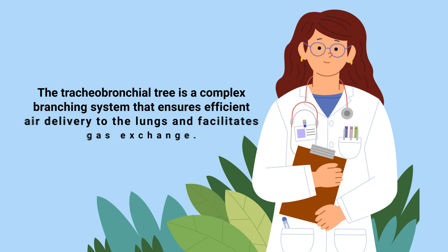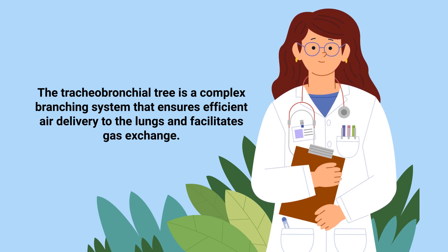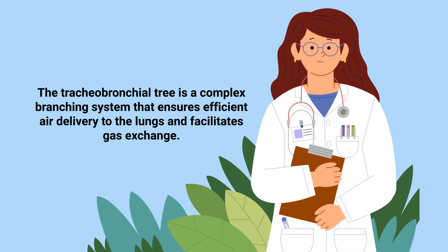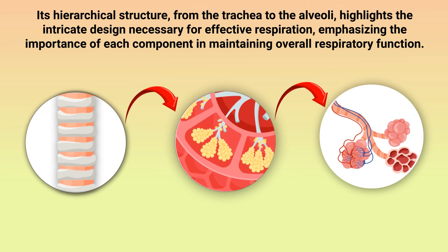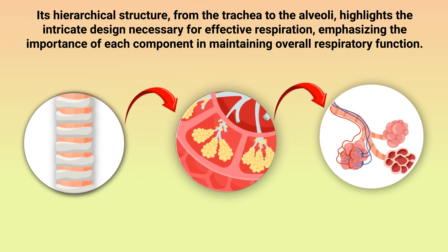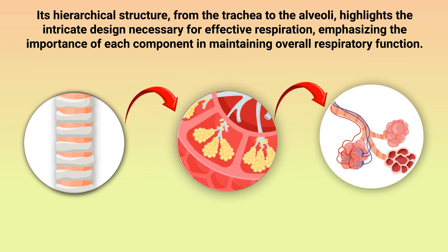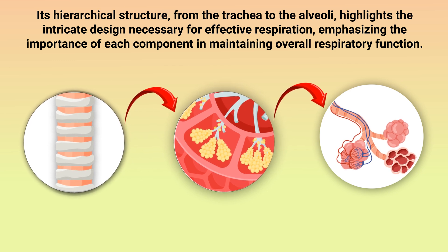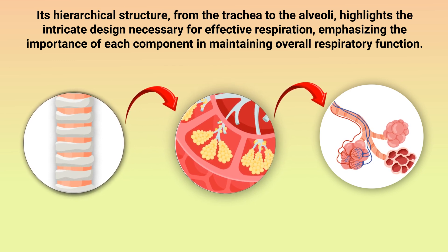The tracheobronchial tree is a complex branching system that ensures efficient air delivery to the lungs and facilitates gas exchange. Its hierarchical structure from the trachea to the alveoli highlights the intricate design necessary for effective respiration, emphasizing the importance of each component in maintaining overall respiratory function.